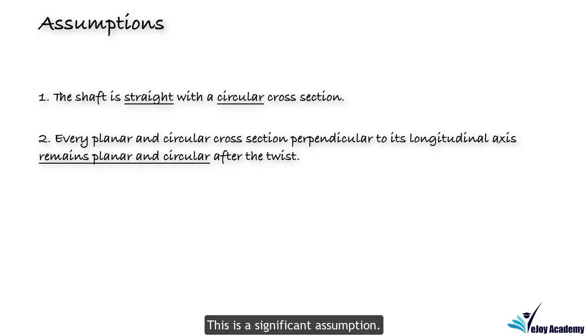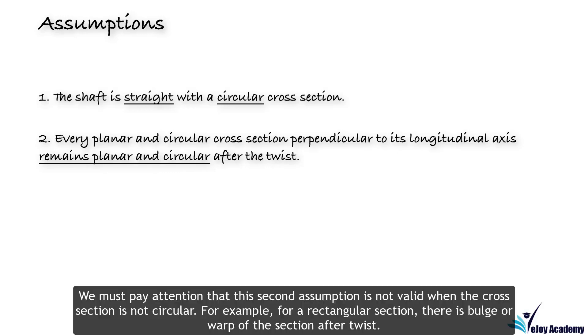This is a significant assumption. We must pay attention that this second assumption is not valid when the cross section is not circular. For example, for a rectangular section, there is bulge or warp of the section after twist.